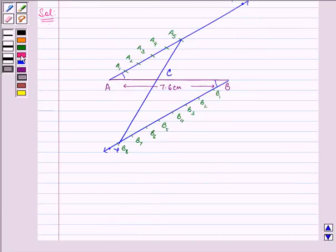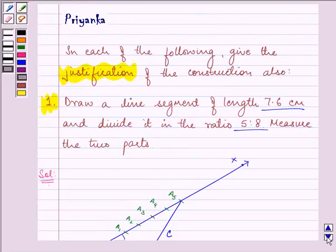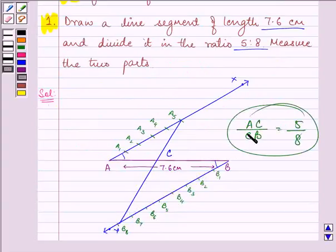Now for justification, we measure AC and CB separately. AC equals 2.9 cm and CB equals 4.7 cm. We can verify that AC:CB is in ratio 5:8.